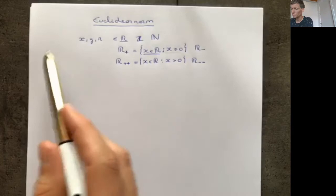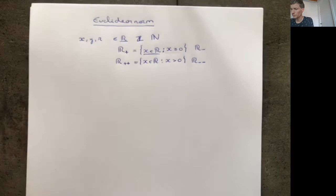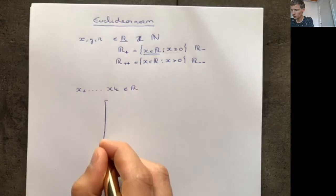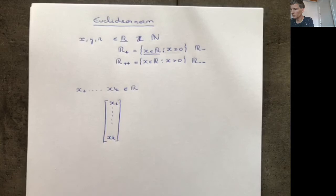We will be interested mainly in numbers in ℝ, but they might also be in other sets such as ℕ. Secondly, we are also going to look at vectors. If we have numbers x₁ up to xₖ, all of which can be in ℝ, then we can put them into one object — for example (x₁, ..., xₖ). This is one object and it's called a vector.